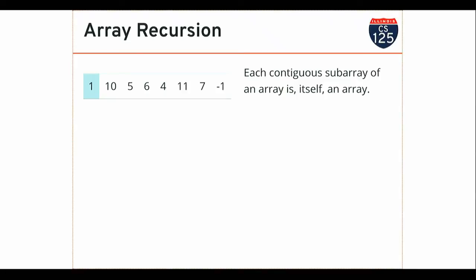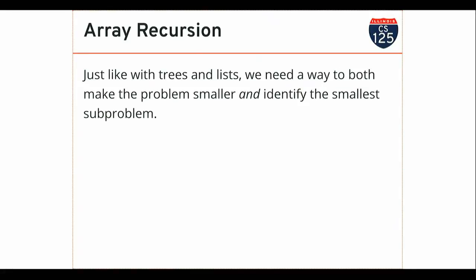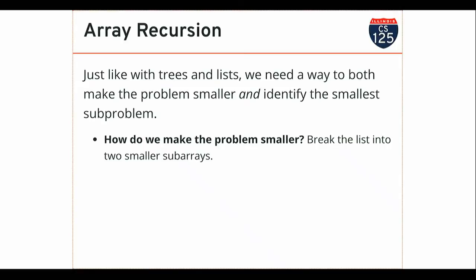Just like a tree where I broke it down into right subtree and left subtree until I got to a tree with one node, with an array I can split it into smaller and smaller pieces until I get to an array with a single element. Then I can build solutions up this way — looking at left subarray, right subarray of that, and continuing. I need a way to make the problem smaller and identify the smallest sub-problem. The smallest sub-problem on arrays is an array with a single element or zero elements.